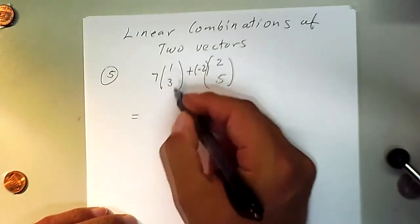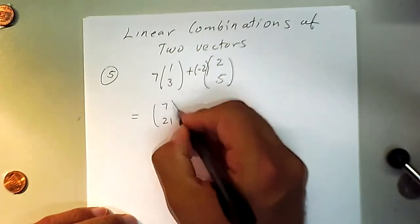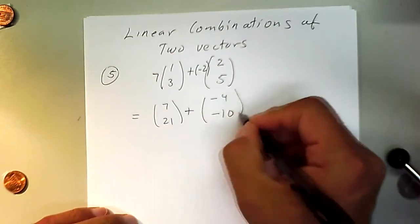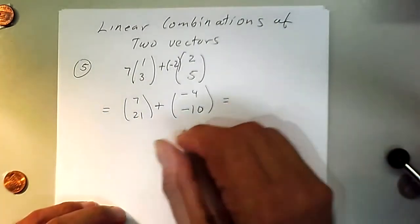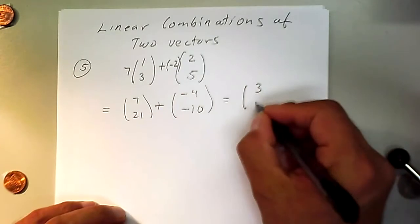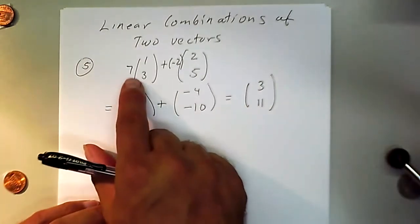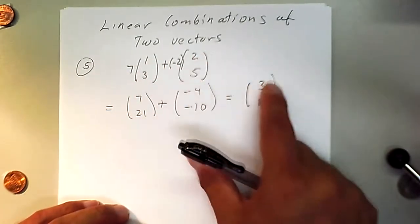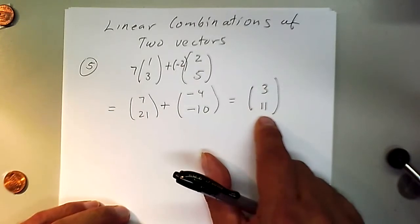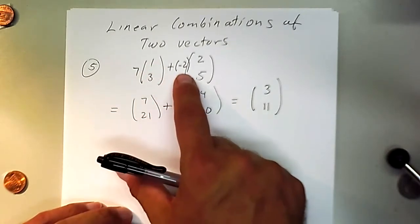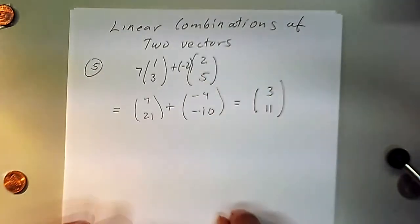Performing the operation: 7×(1,3) = (7, 21), and −2×(2,5) = (−4, −10). Adding: (7 + (−4), 21 + (−10)) = (3, 11). So the linear combination 7·(1,3) + (−2)·(2,5) gives us (3, 11). That is what a linear combination is — and we can generate many things this way.